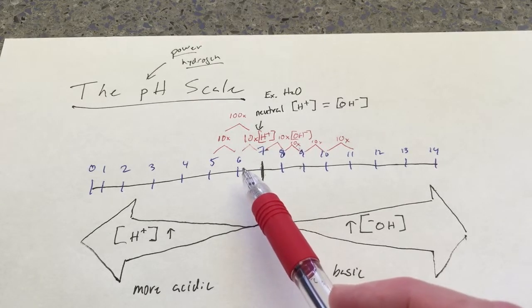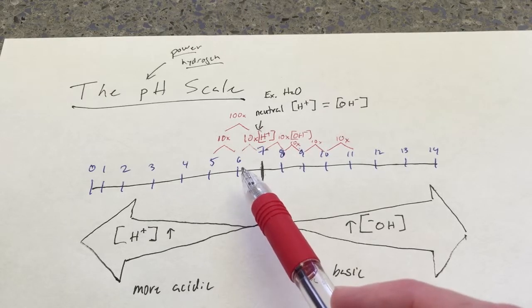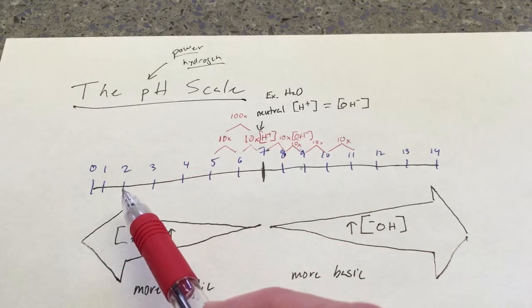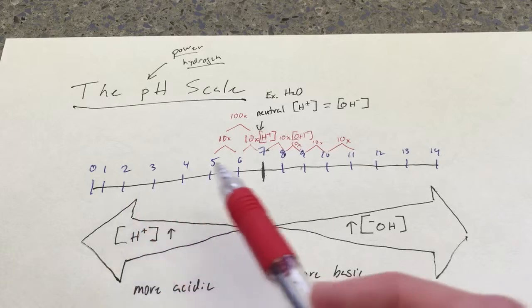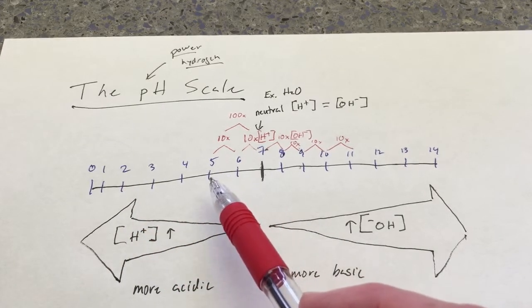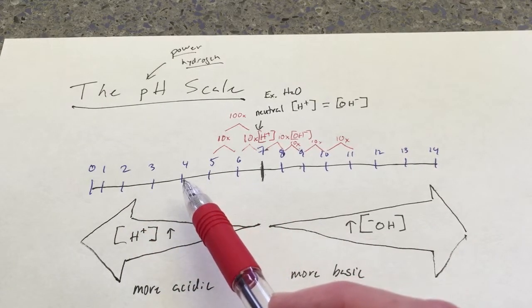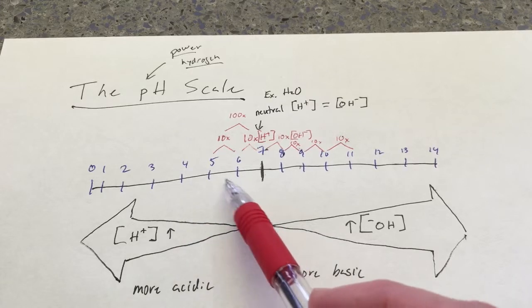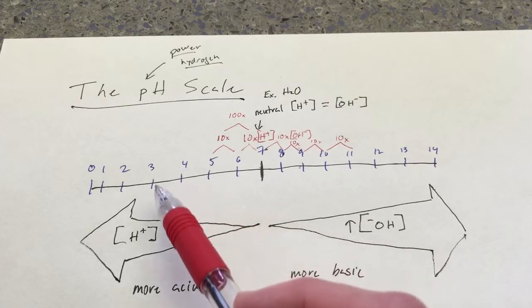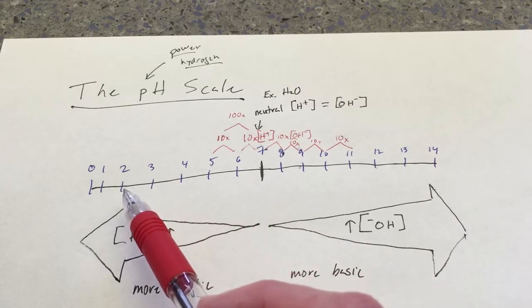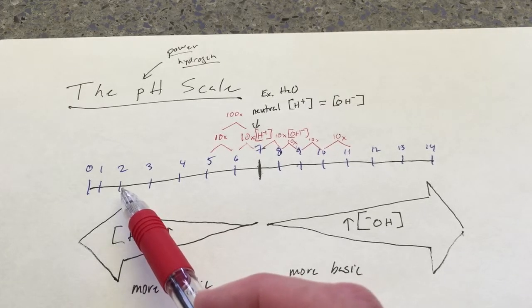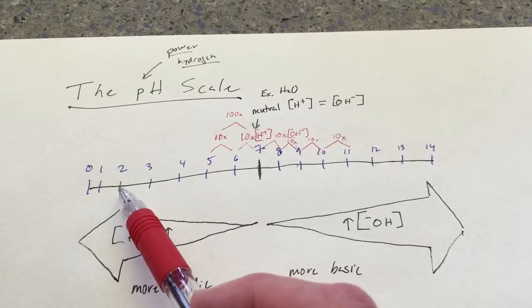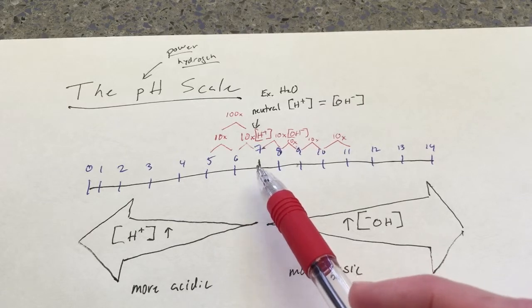But when we get to things like gastric juice, like stomach acid, that is way down at pH 2. At 10, 100, 1,000. 10,000. 100,000. So, stomach acid is 100,000 times more acidic than saliva or blood.